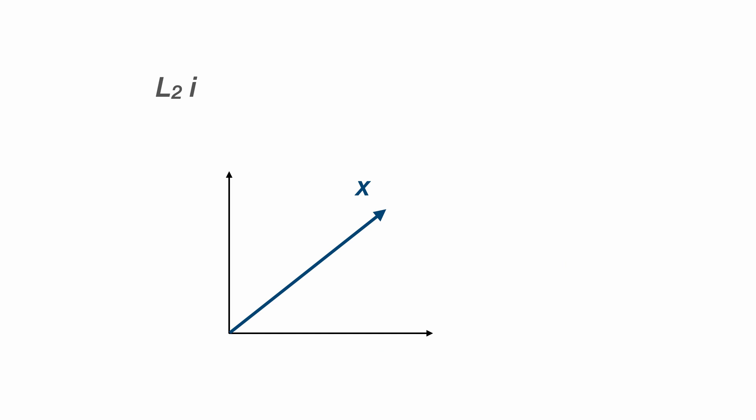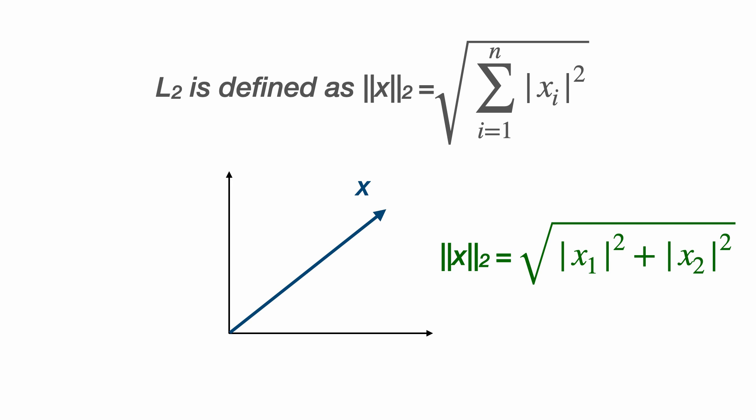And for the L2 norm in two dimensions, we have the square root of x1 squared plus x2 squared. Think of this as like using Pythagoras theorem to find the length of the vector x, or even the square root of the dot product of the vector x with itself.